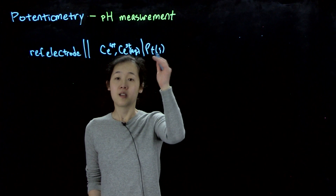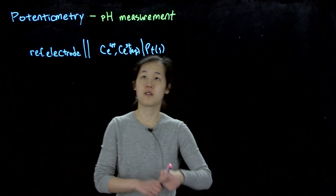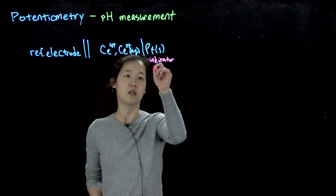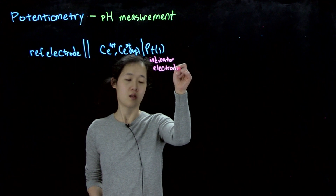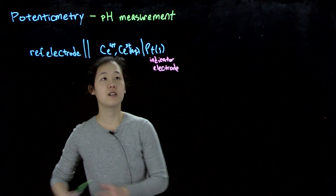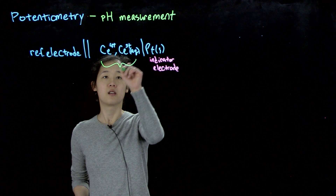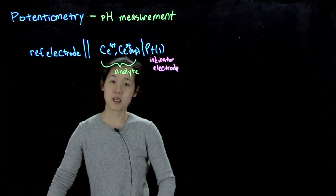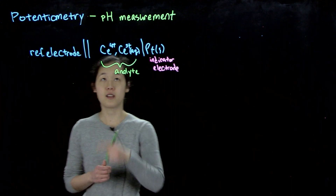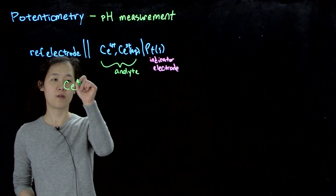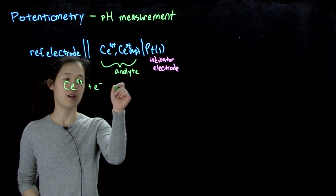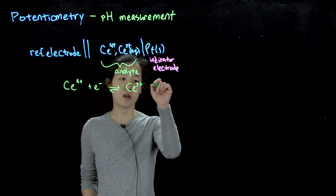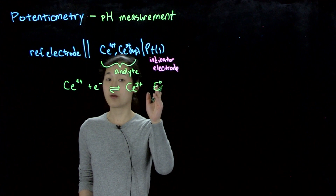This platinum electrode will be our indicator electrode, and this combination will be our analyte. The key half-reaction here is Ce⁴⁺ + e⁻ → Ce³⁺. This should be at some known standard reduction potential.